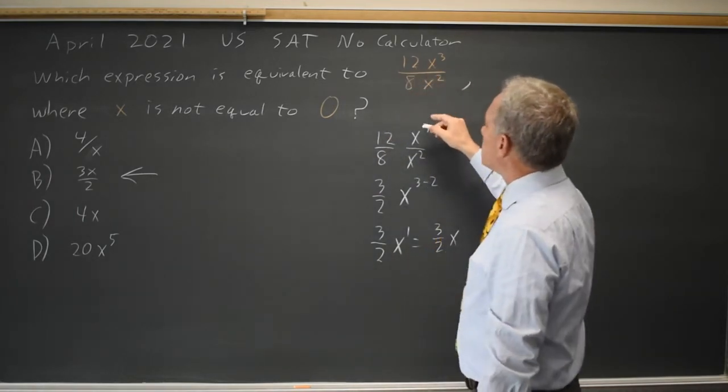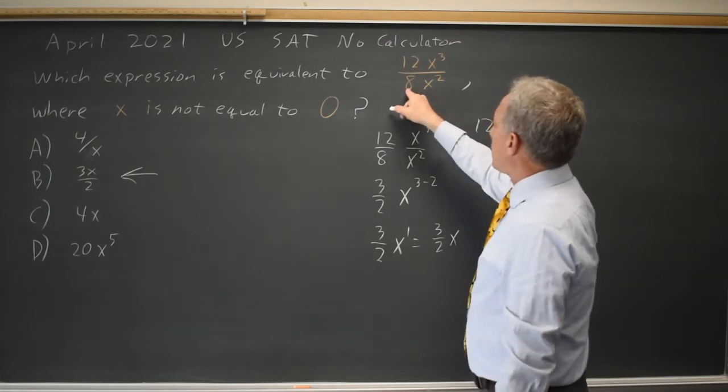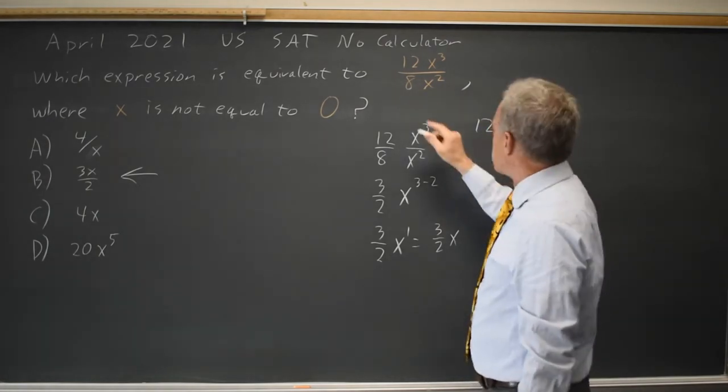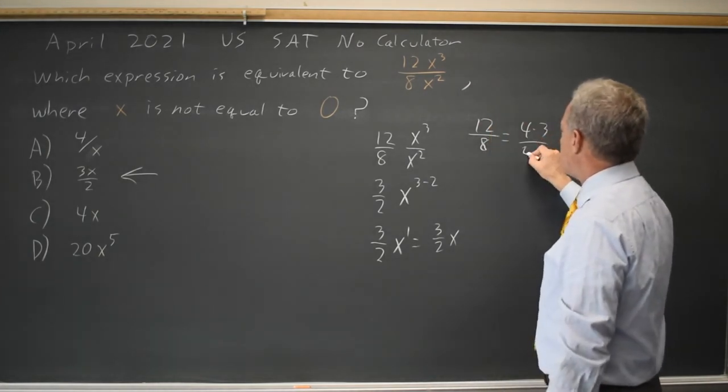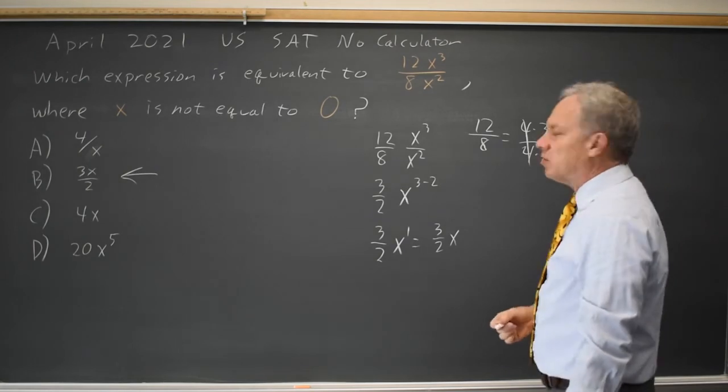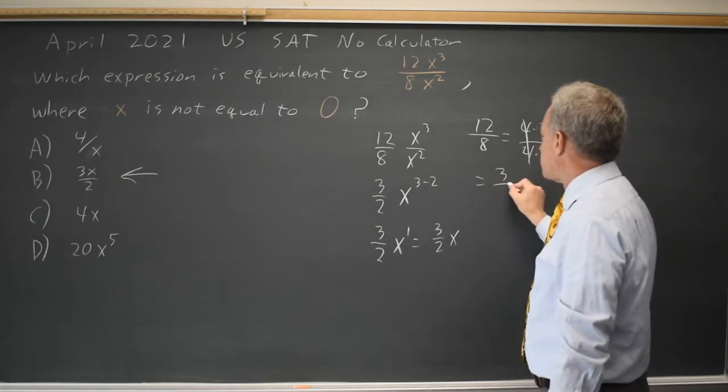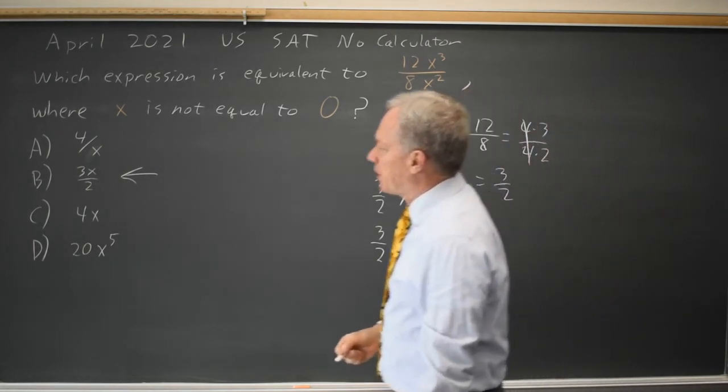So 12 times 1 cubed is 12. 8 times 1 squared is 8 times 1 is 8. So that's 12 over 8, which is 4 times 3 over 4 times 2. 4 over 4 is 1, so that's 3 halves. The correct answer will equal 3 halves when x equals 1.